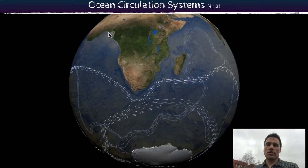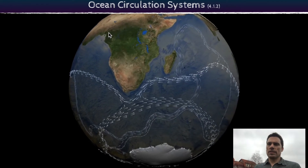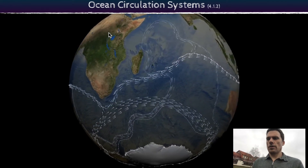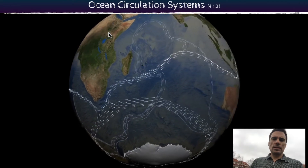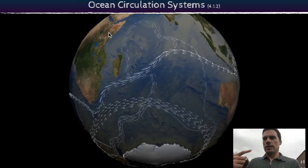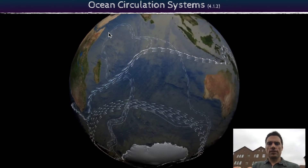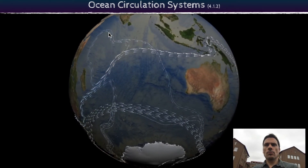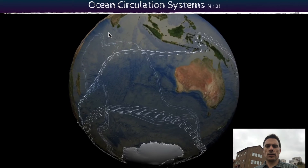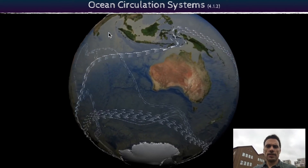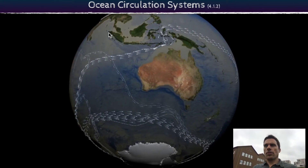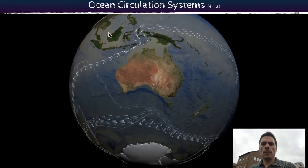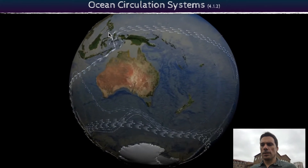There are a lot of drivers to this. The Coriolis effect is a big player — that's the rotation of the earth and how it spins, how water and gases spin along the sphere. But really with the thermohaline circulation aspect, we're looking at 'thermo' which is temperature and 'haline' which is salt.